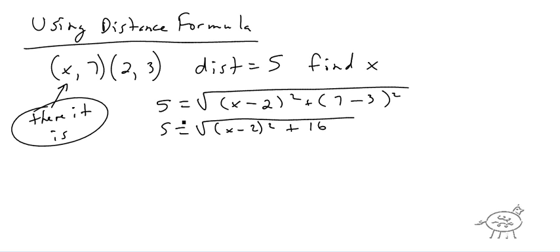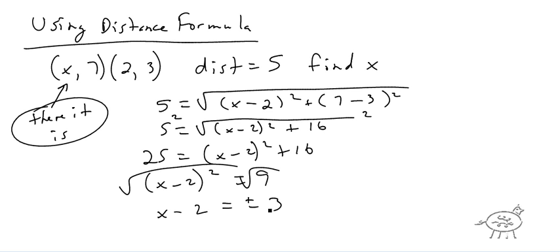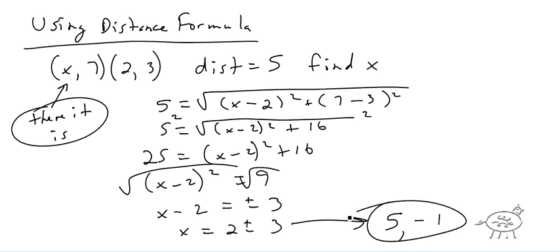To solve, square both sides: 25 equals (x minus 2) squared plus 16. Subtract 16 from both sides to get 9 equals (x minus 2) squared. Take the square root of both sides — don't forget the plus or minus — so x minus 2 equals plus or minus 3. Therefore x equals 2 plus or minus 3, giving x equals 5 or x equals negative 1. Those are your two answers.